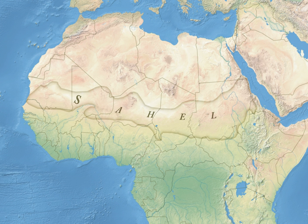It is a transitional ecoregion of semi-arid grasslands, savannas, steppes, and thorn shrublands lying between the wooded Sudanian savannah to the south and the Sahara to the north. The topography of the Sahel is mainly flat, and most of the region lies between 200 and 400 metres in elevation.